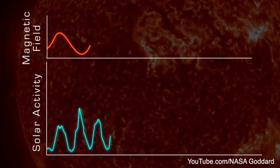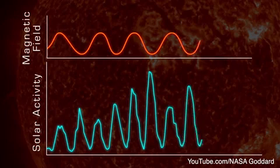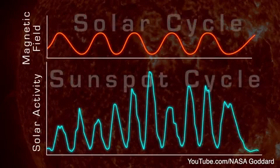The Sun's 11-year cycle is a symptom of a longer 22-year cycle called the solar cycle, or Hale cycle, which affects the Sun's magnetic fields.